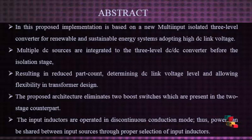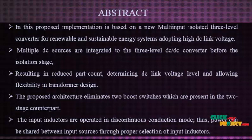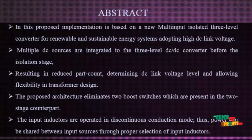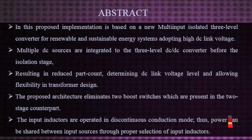This proposed implementation is based on a new multi-input isolated 3-level converter for renewable energy and sustainable energy systems adopting high DC link voltage. Multiple DC sources are integrated to the 3-level DC to DC converter before the isolation stage, resulting in reduced part count, determining DC link voltage level, and allowing flexibility in transformer design.